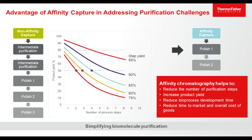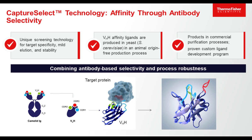Reducing the number of steps means you increase product yield by lowering losses. You reduce development time because you already start with a fairly pure product after your affinity capture, which means you only need to do some polishing steps — which in the end, of course, reduces the time to market for a final biopharmaceutical.